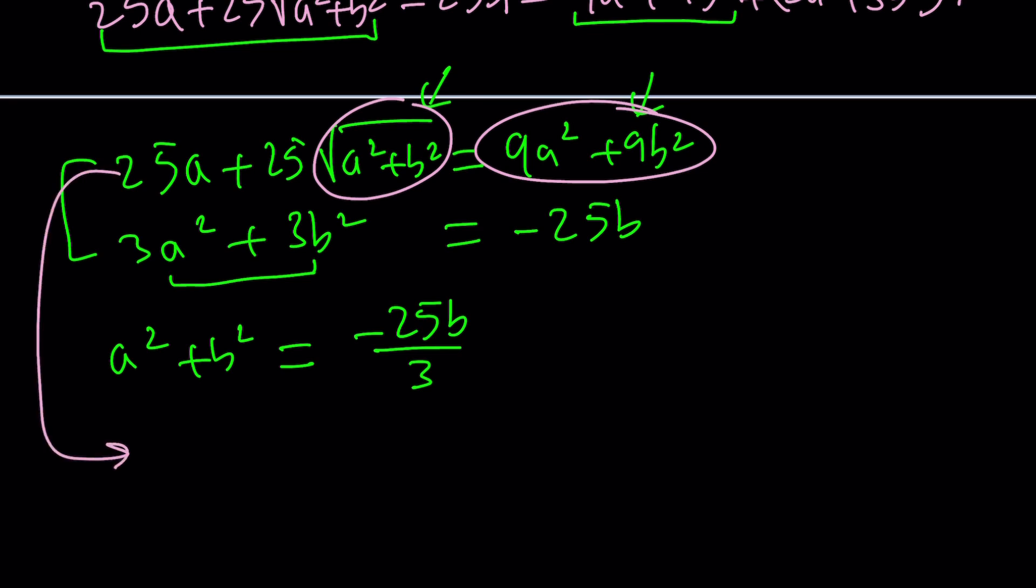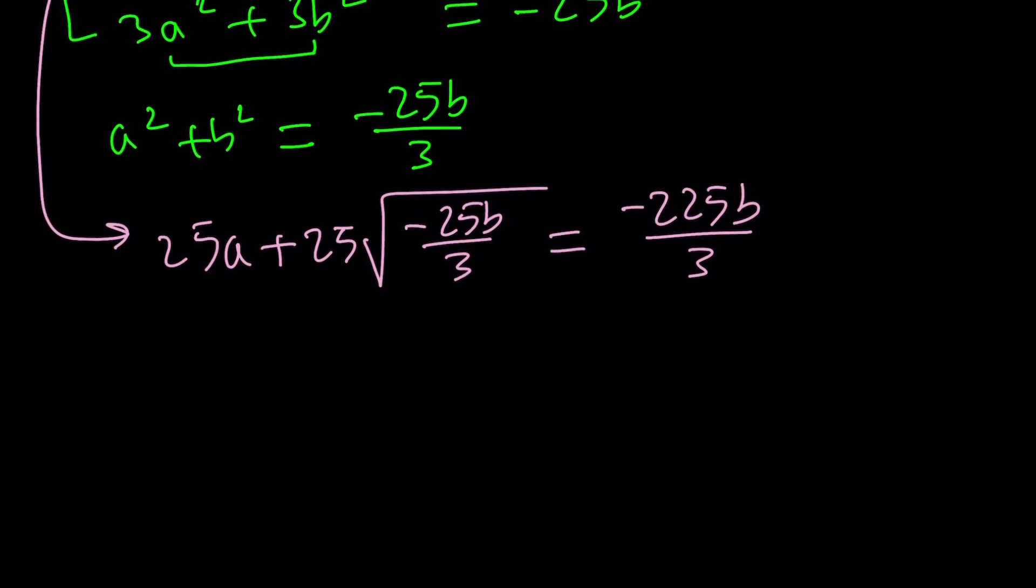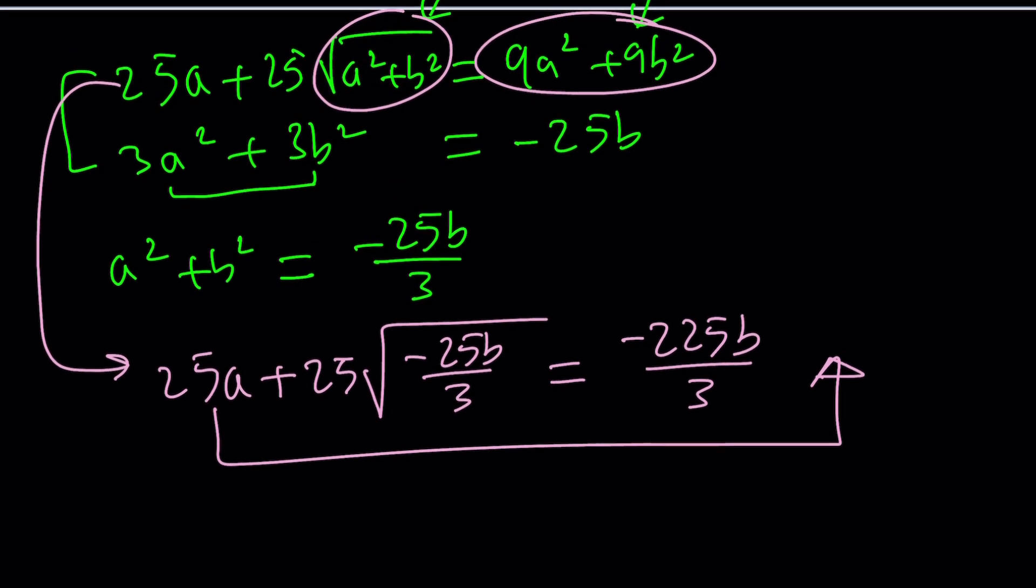So from that equation I get 25A plus, by the way I have to use the square root of this. Uh oh that's going to be bad right. And then equals nine times this. It's going to be negative 225B divided by 3. So at this point I think I would probably put these together and then square both sides and then it should give me the answer right.